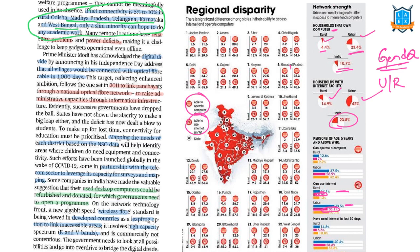Especially with the COVID scenario, we understand the importance and necessity of internet. The author suggests the government should use NSSO data to start mapping districts which need internet at top priority, taking help from telecom companies for surveys and mapping. First, identify the gaps. Second, provide tools for accessing the internet — refurbished laptops can be donated to students. Third, provide internet services in inaccessible areas using wireless fiber technologies used by developed countries, though the cost is high.